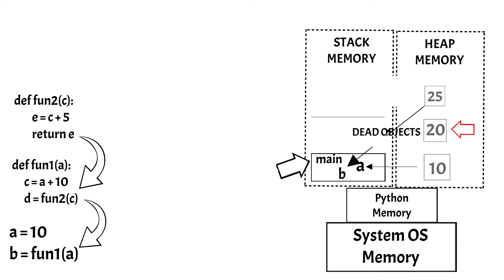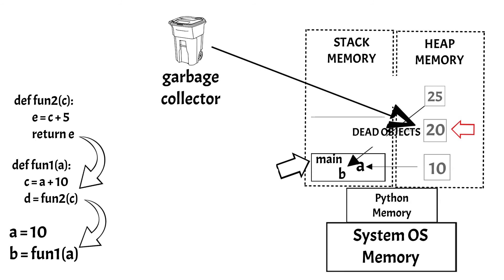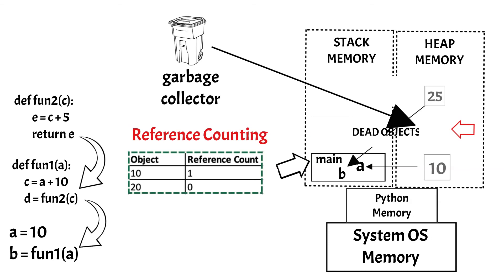The moment the Python interpreter finds that a dead object exists in the heap memory, it will immediately invoke the garbage collector. The garbage collector will then remove the integer object 20 from the heap memory. This type of garbage collector algorithm is called reference counting. The Python interpreter always keeps a table where it counts the number of references to each object in the heap memory. The moment any object in the heap memory counts to zero, the interpreter declares it as a dead object, and then the garbage collector is invoked to clear it off. This kind of algorithm is called reference counting.